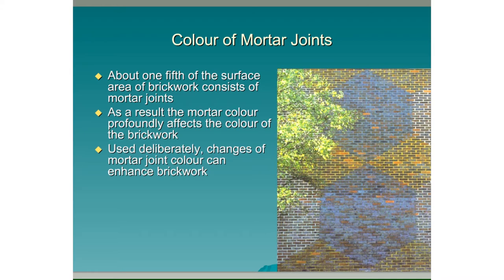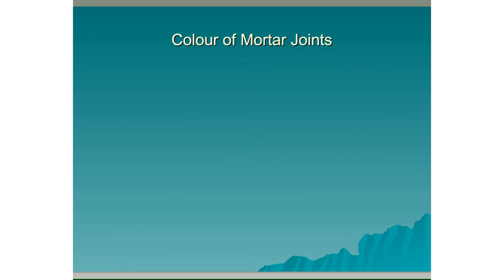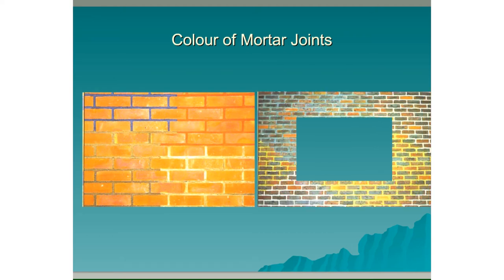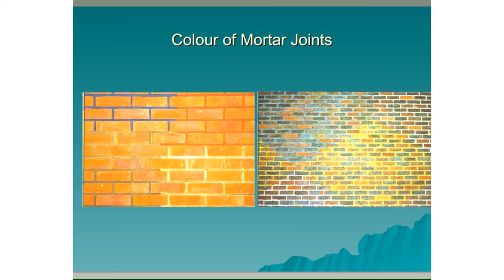This wall is built with the exact same colour bricks. The only thing that's different is that in certain sections we've used different coloured mortar to give this effect. Here's another example of using different coloured mortar to give a different effect. We can see the bricks are the exact same colour, but by using different coloured mortar it does give the appearance that the bricks are different colours.